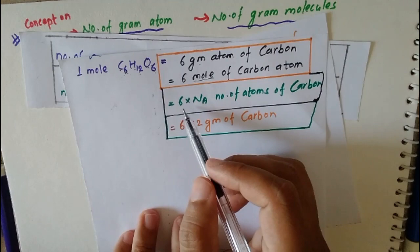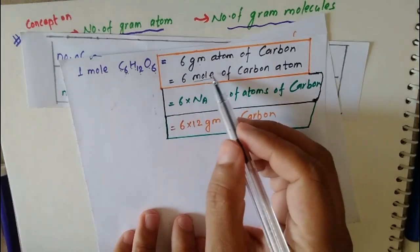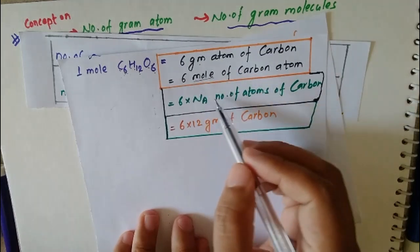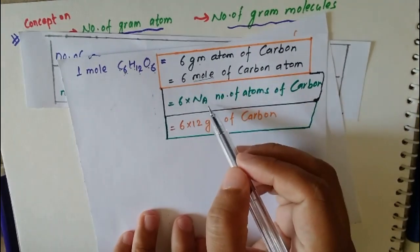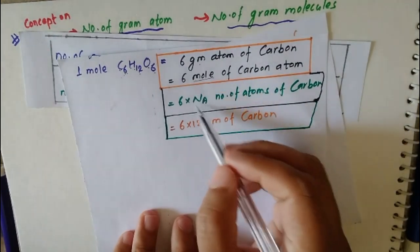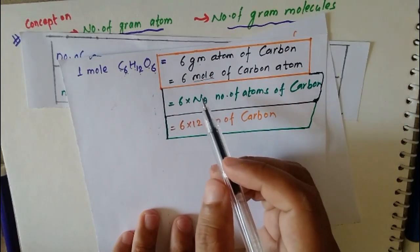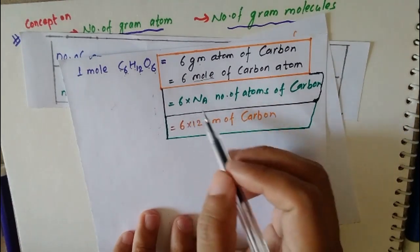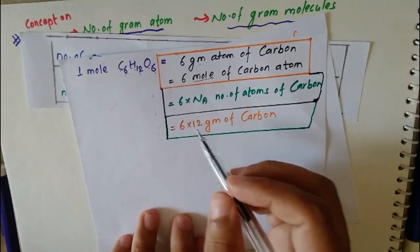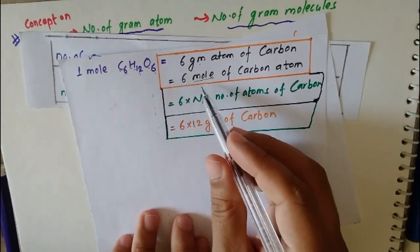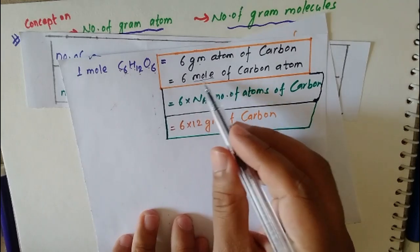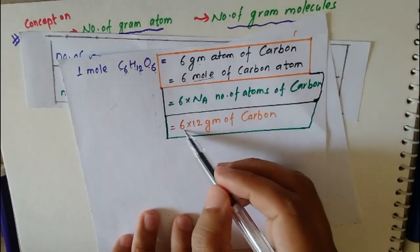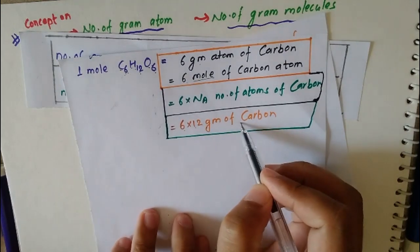If you want to calculate the number of atoms, multiply the moles by Avogadro's number — 6 into Avogadro's, 6 into Avogadro's, 6 into Avogadro's. If you want to calculate the mass in grams, multiply the moles by atomic weight. For example, 6 moles of carbon atom means 6 into 12 grams of carbon.